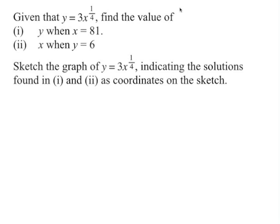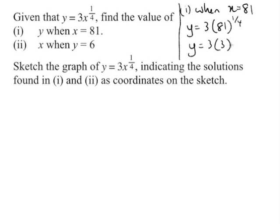So let's do part 1. When x equals 81, the value of y equals 3 times 81 to the power of 1 over 4. This is the same as the fourth root of 81, and the fourth root of 81 is actually 3. So y equals 3 times 3 which equals 9.